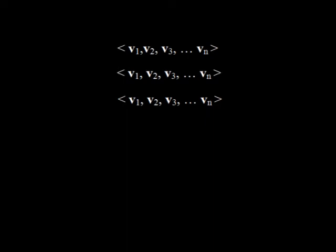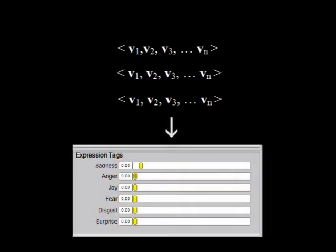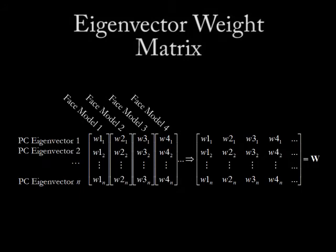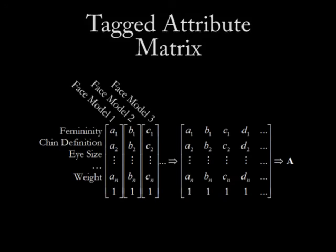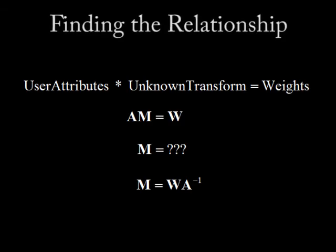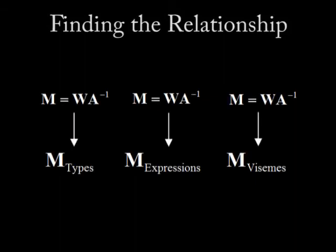For the useful generation of new faces, we must correlate these abstract eigenvector weights with the intuitive human-readable attributes that we tagged in the previous step. In order to do this, we form two matrices. The first, W, is a set of all eigenvector weights for all faces. The other, matrix A, is a set of all attribute tags for the same set of faces. Next, we represent the relationship between those two matrices as a transformation matrix, and solve for this unknown element by multiplying the weight matrix with the pseudo-inverse of the attribute matrix. We perform this analysis step three times — on face types, expressions, and visemes separately — and generate three transformation matrices.